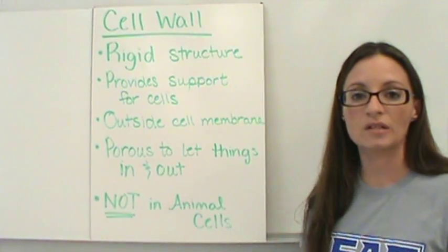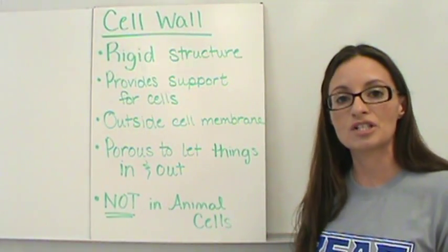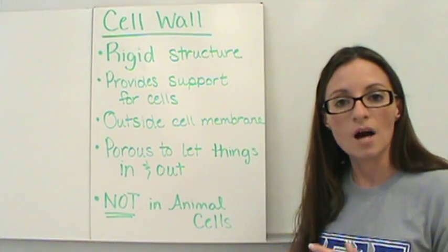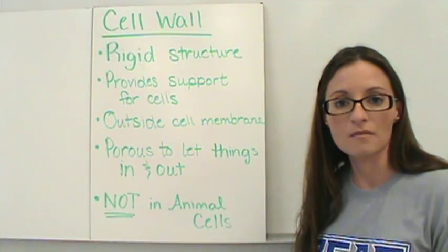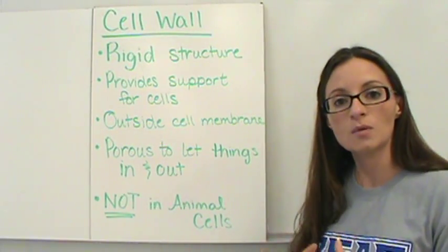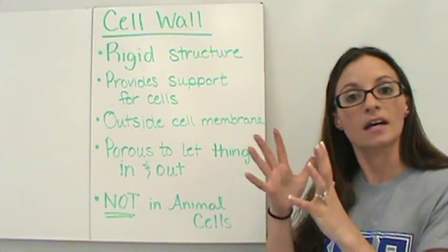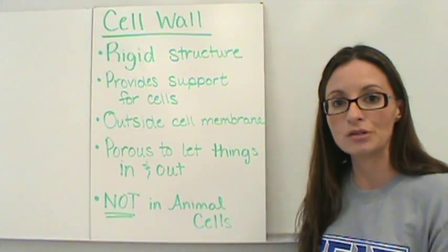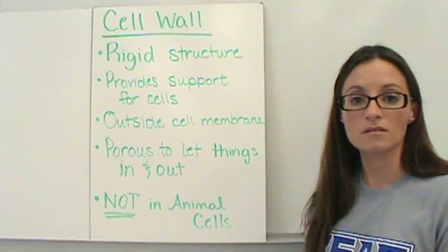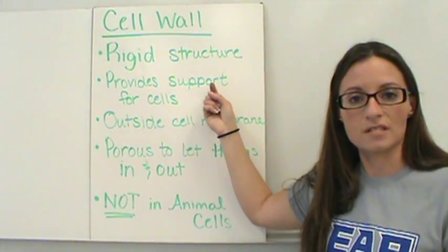First, let's talk about the cell wall. The cell wall is an extremely rigid structure. It actually helps provide support for plant cells, because plant cells don't have a skeleton like animals do. So it helps provide them with that structure to be able to stand upright. That's how we can have trees that are so tall — because of the cell walls.